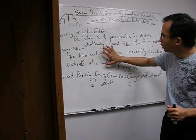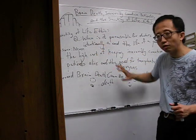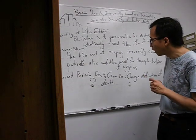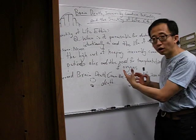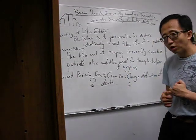So against the sanctity of life ethic, there is this very practical problem of the high cost of keeping irreversibly comatose patients alive, and the fact that their organs could be used for transplantation. So what to do?